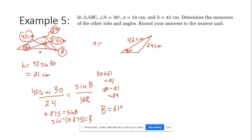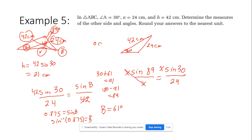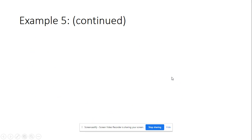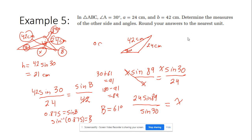Now I need to find side x, which is opposite the 89° angle. Using the sine law: sine 89 over x equals sine 30 over 24. Multiplying through gives x equals 24 sine 89 over sine 30. When I compute this, x equals approximately 47.99, so to the nearest unit, x equals 48 centimeters. That completes the first triangle.